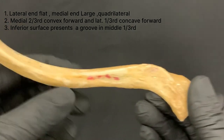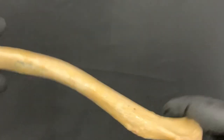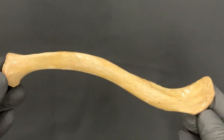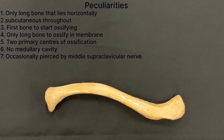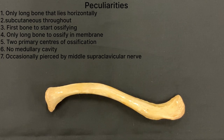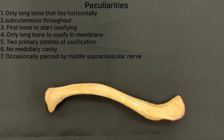The inferior surface is grooved in its middle one-third. The peculiarities of the clavicle bone: it is the only long bone which lies horizontally; it is subcutaneous throughout; it is the first bone to start ossification; it is the only long bone which ossifies in membrane; it is the long bone which has got two primary centers of ossification; there is no medullary cavity; and it is occasionally pierced by the middle supraclavicular nerve.